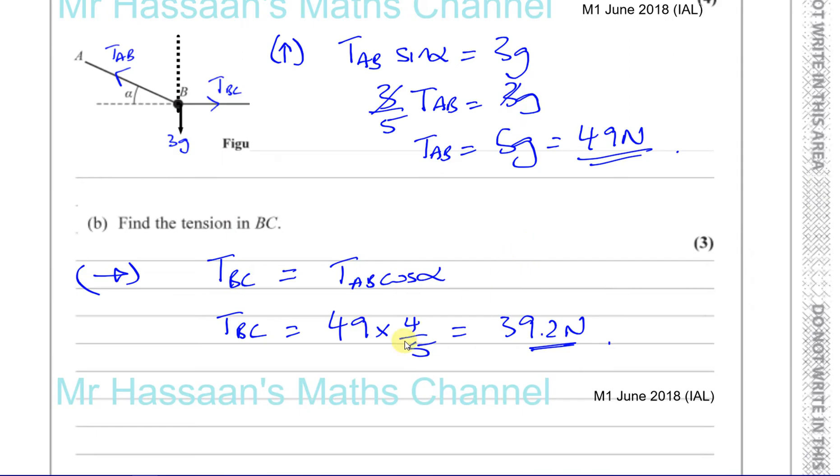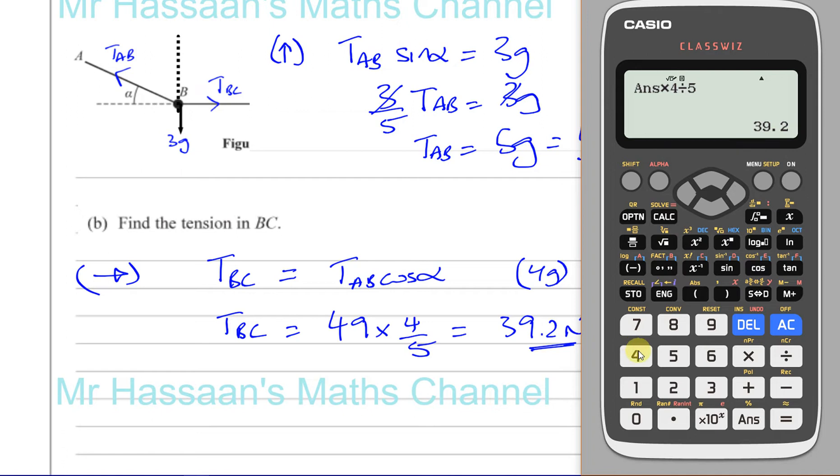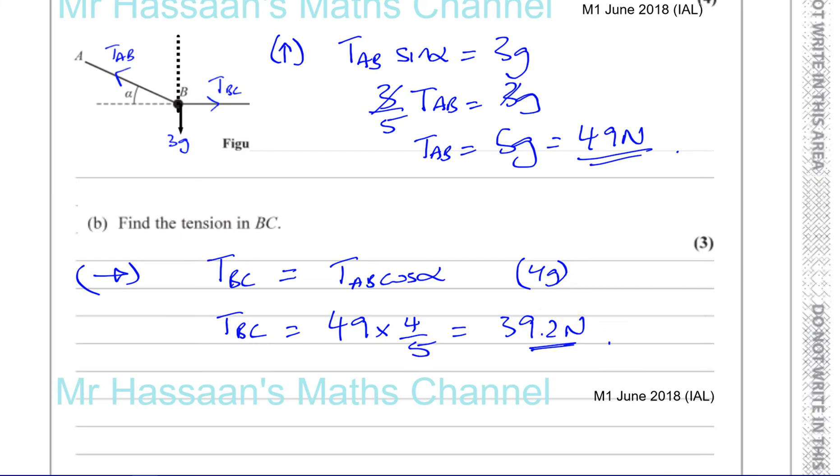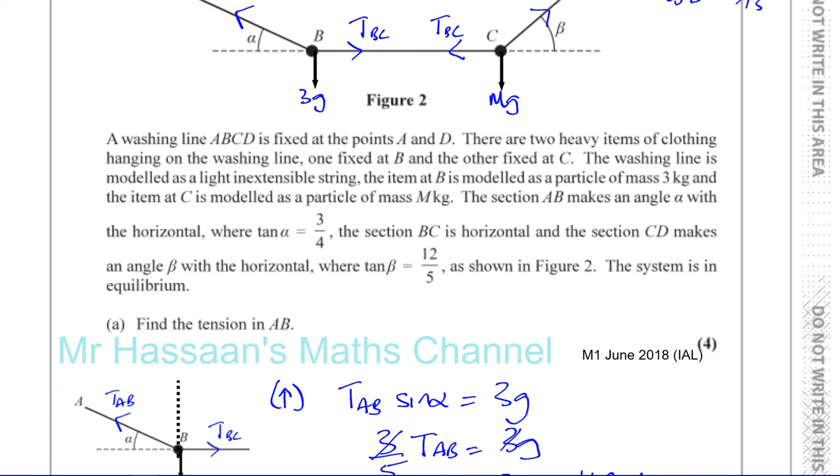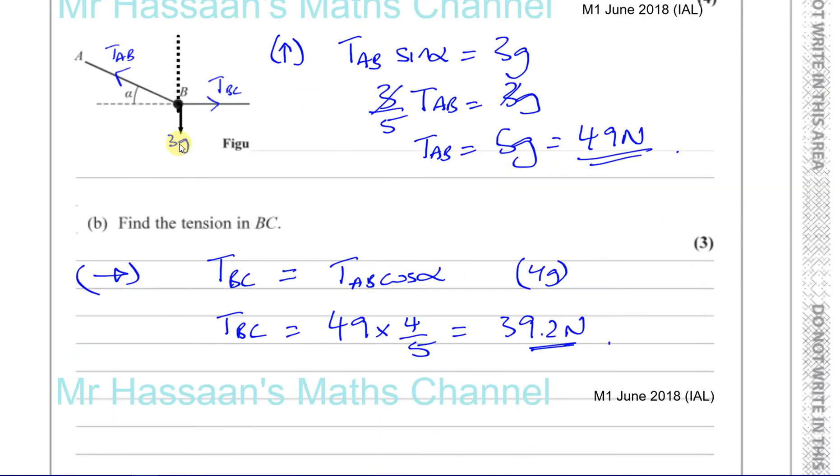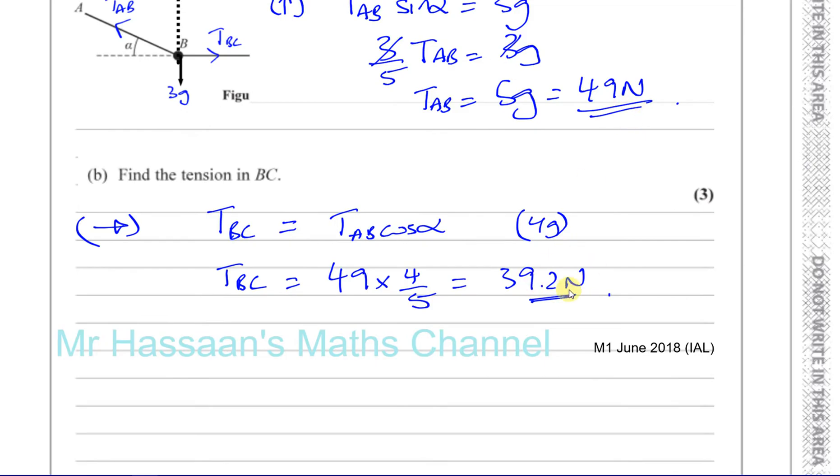We could have also found this in terms of G. It would have been 5 G times 4. But you would end up with 4 G Newtons. And you can see that will give you the same answer. 4 times 9.8. It gives you the same answer. But they gave us the forces in terms of Newtons without G. So we're going to do the same thing in the end. There's no problem either way. So you can write this as 39.2. Or you can even write it as 4G. Both of them are correct.